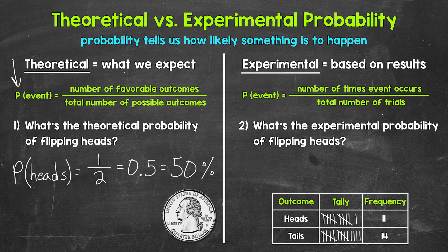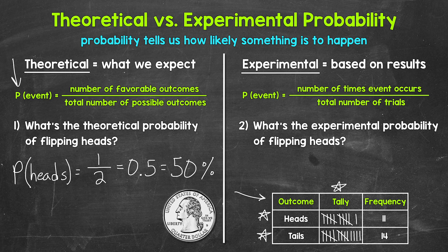Now let's move on to experimental probability of flipping heads. Experimental probability tells us how likely something is to happen based on the results of an experiment — it's based on data collected from repeated trials. The coin was actually flipped here and the results are below. Each time the coin was flipped, that's called a trial. We had two possible outcomes: heads or tails. The tally column shows data collected after each flip, and the frequency column counted everything up at the end. There were 11 heads and 14 tails, for a total of 25 trials.